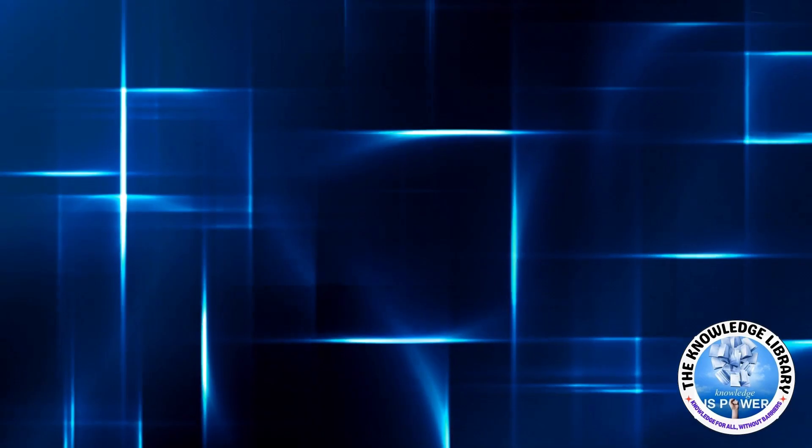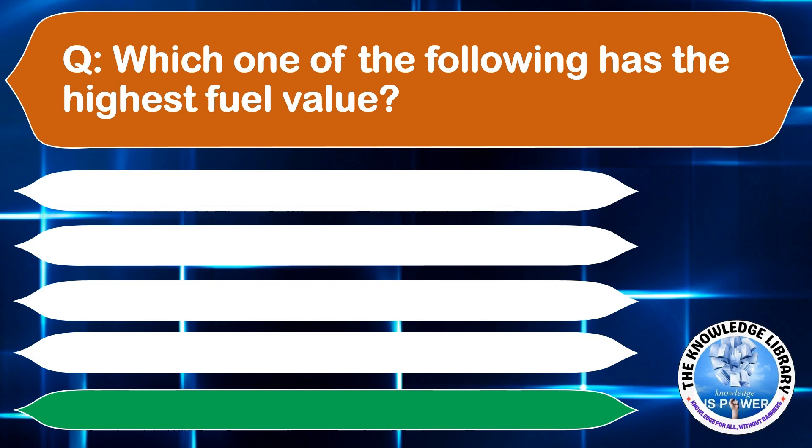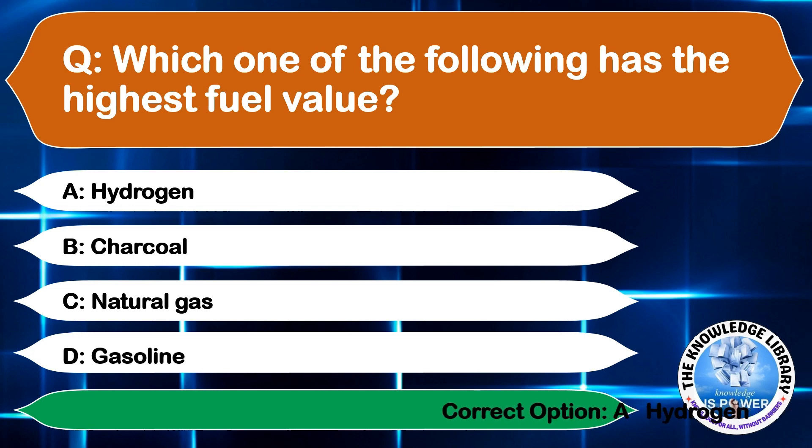Which one of the following has the highest fuel value? A: Hydrogen, B: Charcoal, C: Natural gas, or D: Gasoline. The correct answer is option A, Hydrogen.